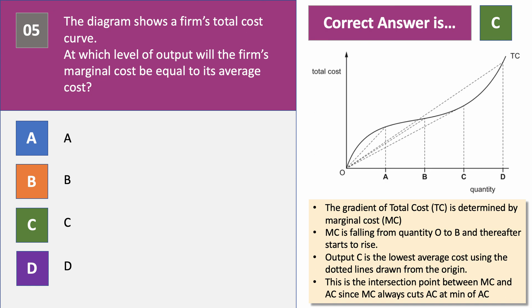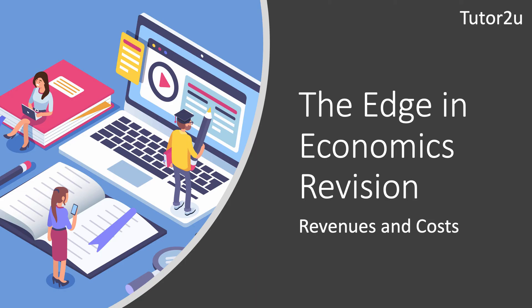We should also know that marginal cost always intersects average cost at the minimum of AC. So output C must be where the firm's marginal cost equals its average cost. There we go — five multiple choice questions on revenue and cost. Hope you did okay on those. There are loads more Edge Revision videos as we head towards the 2019 exams.